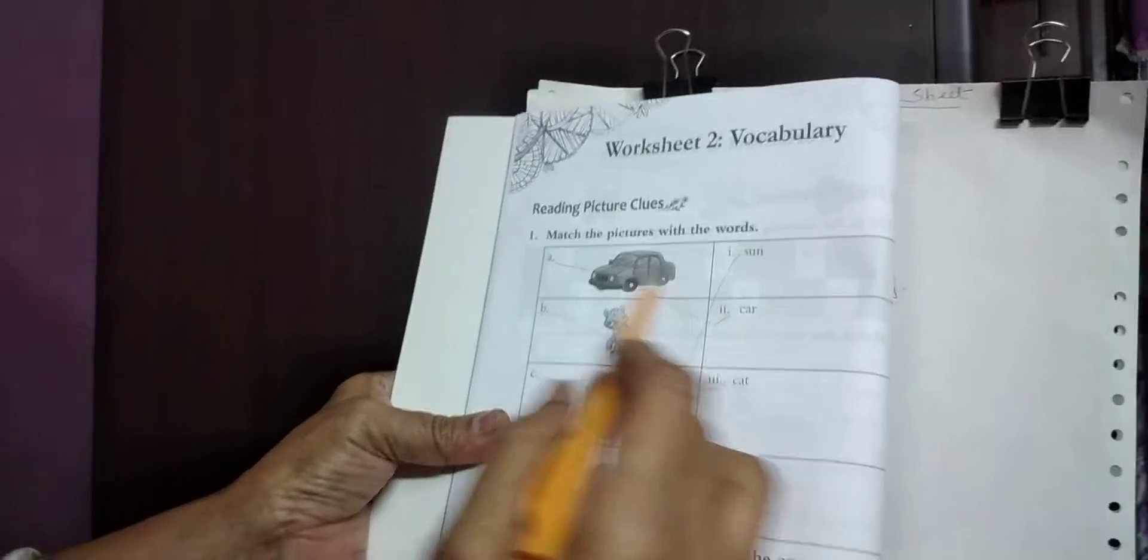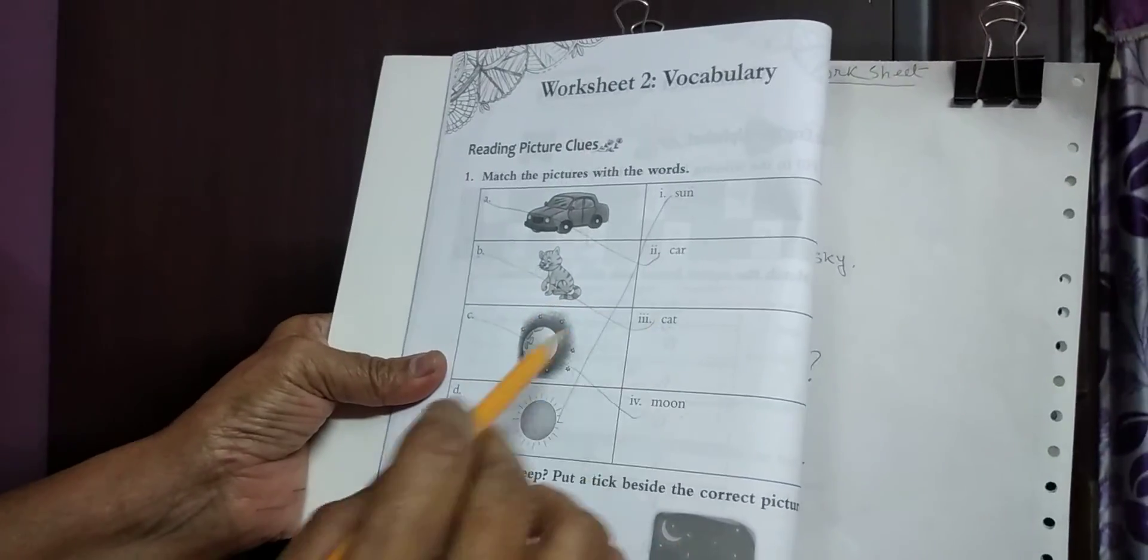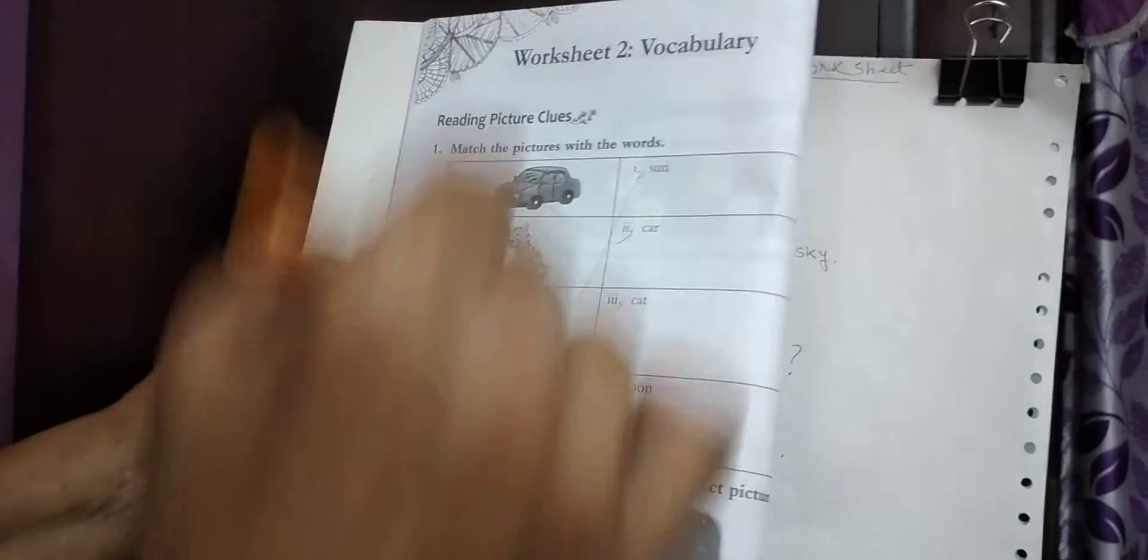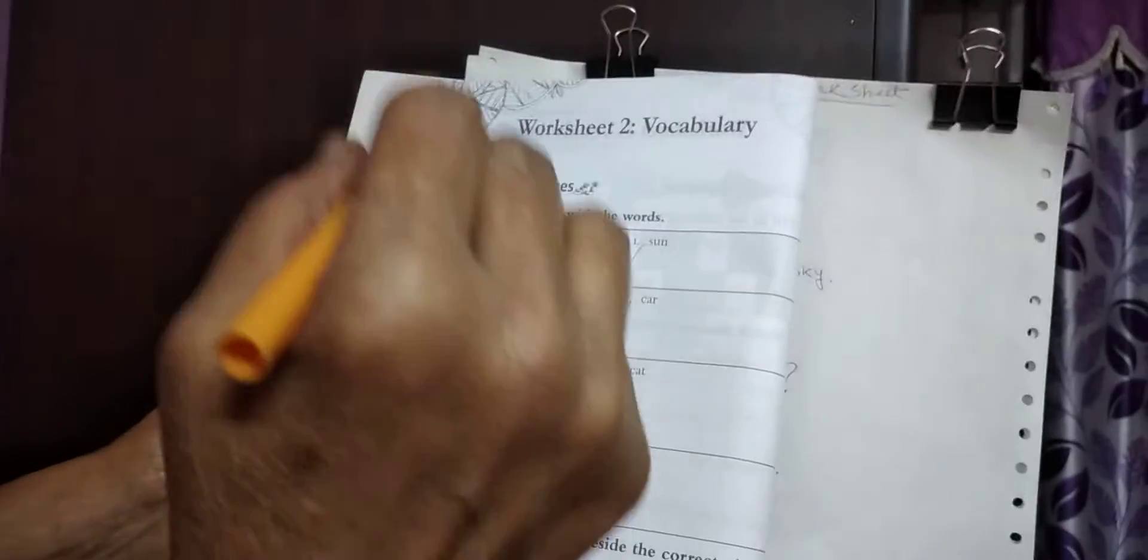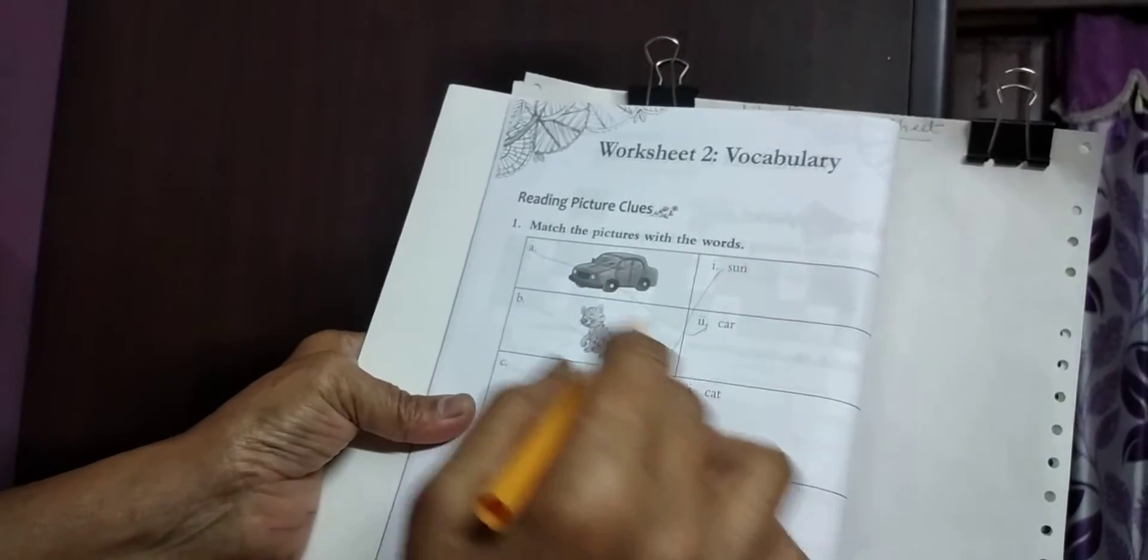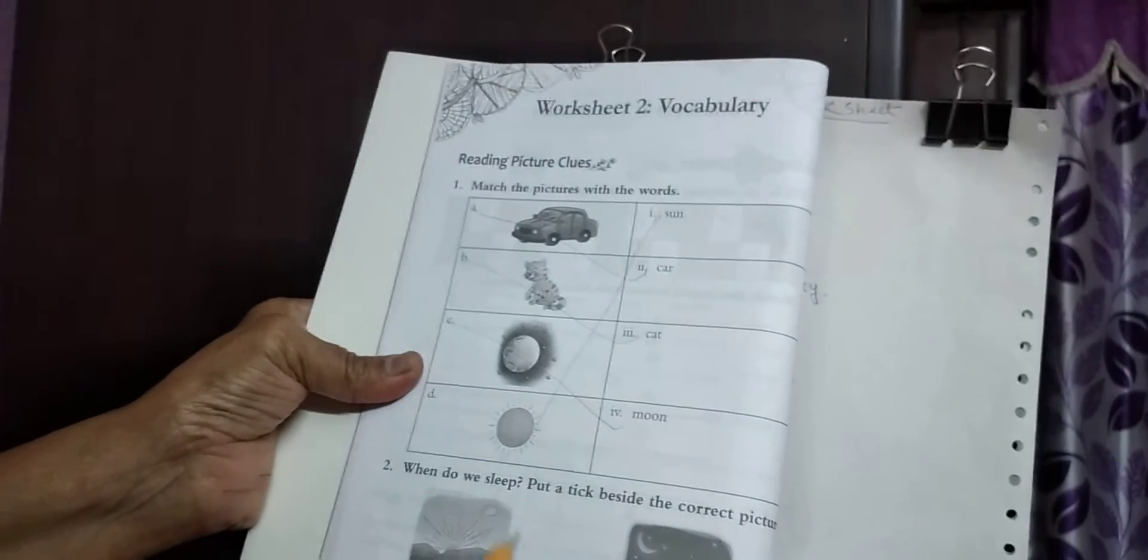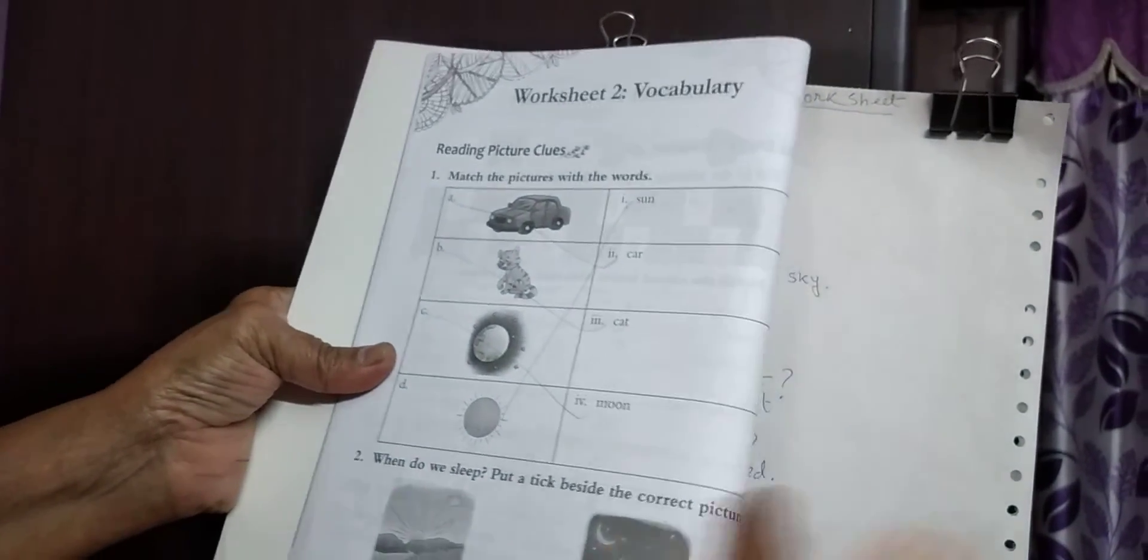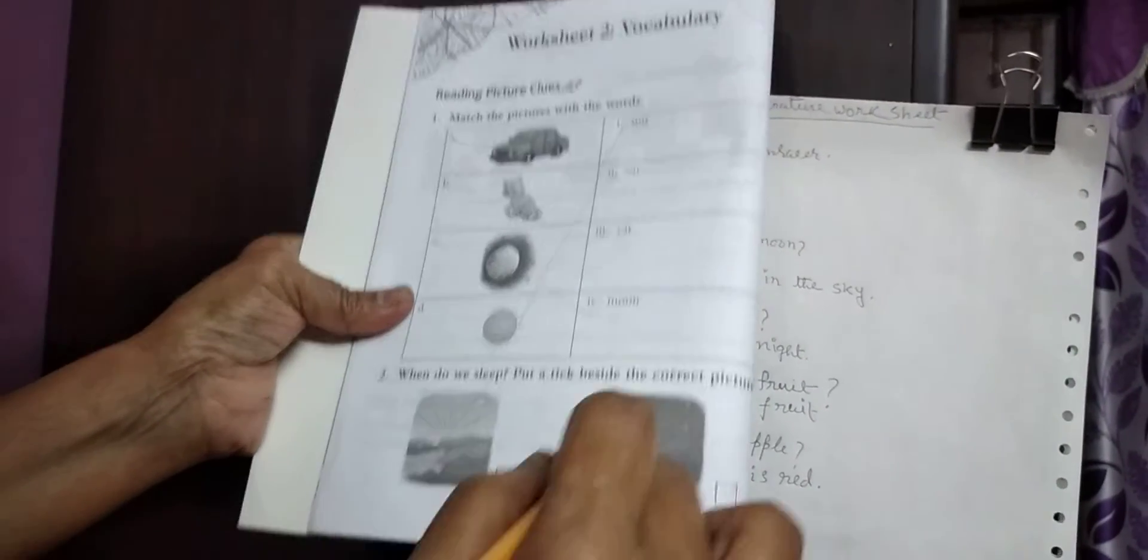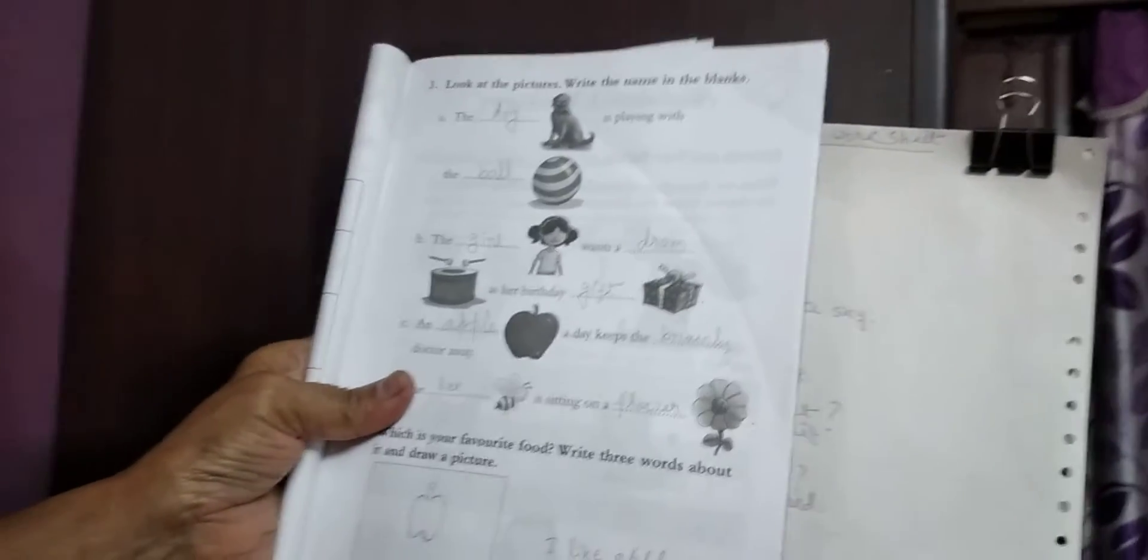Next, look here. Here is given match: car with car, cat with cat, moon with moon, sun with sun. Here questions could be: How many wheels does a car have? There are four wheels in a car. When do we sleep? We sleep at night. Where do we see the moon? We see the moon in the sky.